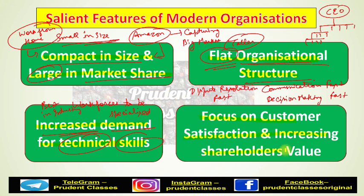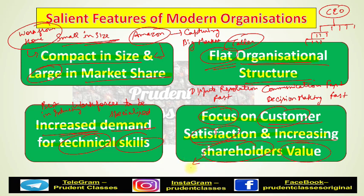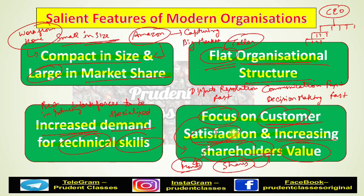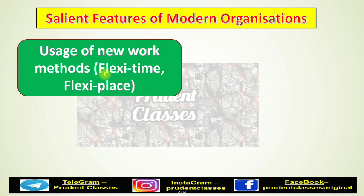The next salient feature is focus on customer satisfaction and increasing shareholders' value. Modern organizations have to focus more on customer satisfaction — the customer is treated as the king of the market, and until you keep the king satisfied you cannot capture the market or survive long term. At the same time, you also need to focus on increasing shareholder value. Shareholders who provide funds by purchasing your shares want maximum return on their investment. So modern organizations must focus on both customer satisfaction and increasing shareholder value.